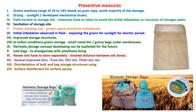Newly harvested lots should be stored separately with an isolated distance from old stocks to prevent new stocks from being infested. Several improved bins are available, developed by different institutes for Indian conditions, like Pusa bin, PAU bin, Tamil Nadu Agricultural University developed bins, and others. Disinfestation of bulk and bag storage structures using insecticide is also important practice to be done prior to storage, and a layer of insecticide spray can be applied immediately after storage.